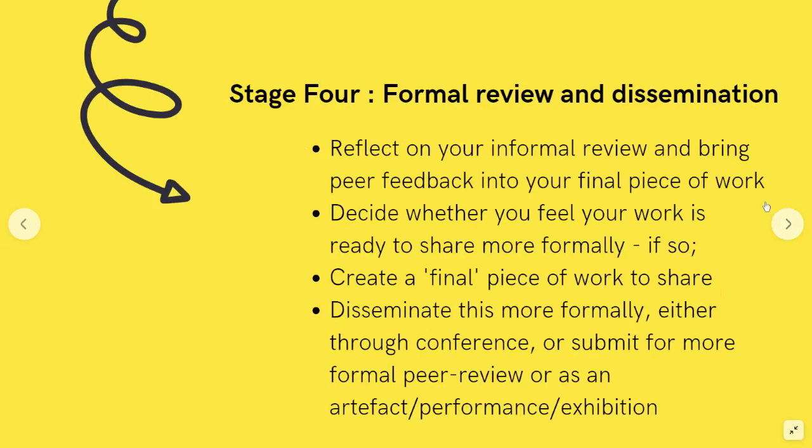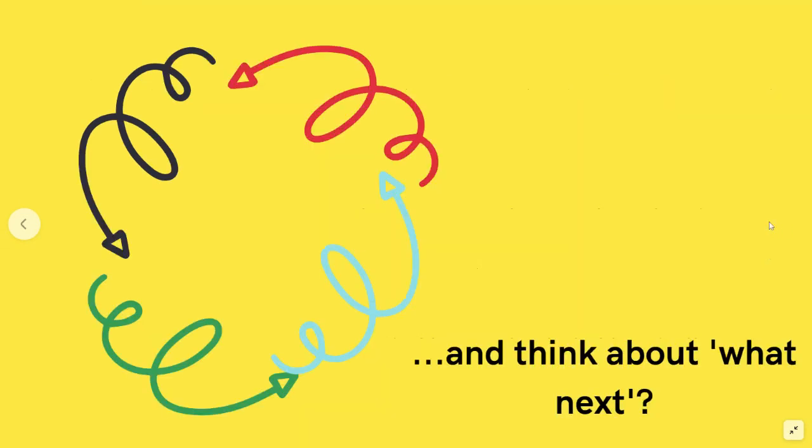Stage four is one of formal review and dissemination. You need to reflect again on your informal peer review and bring that peer feedback into your final piece of work. You might decide that your work isn't ready to share more formally — like a second iteration of a project. But if you do feel it's ready to share, you could consider creating a final piece of work and disseminating this more formally, either at a conference, through a formal peer review, or as part of an exhibition, performance, or artifact. And then you need to think about what next.